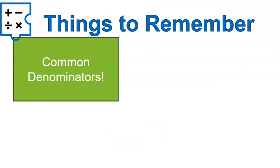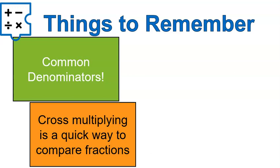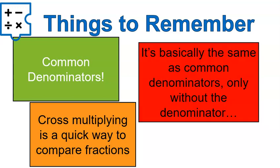All right. So a couple things to remember: common denominators are the easiest way to compare ratios. So you can cross-multiply to find and compare ratios. It's basically the same step as finding a common denominator, only without the denominator. I hope that lesson was helpful for you. Have a wonderful day.